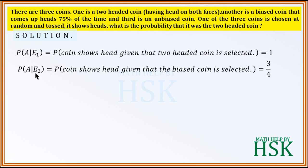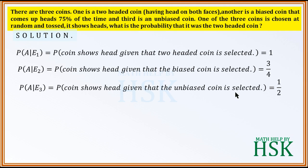P(A|E3) is the probability that the coin shows head given the unbiased coin is selected. Since there are two equally likely outcomes and the favorable outcome is 1, P(A|E3) equals 1/2.